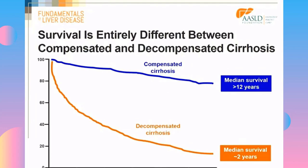The survival is entirely different between compensated and decompensated cirrhosis. For the compensated patient, as long as they remain compensated, the median survival is going to be greater than 12 years. The moment the patient develops one of those clinical complications and becomes decompensated, the median survival immediately goes down to about two years — that is, half the patients will be dead at two years. This is why, when the patient decompensates, it is when we first start thinking of liver transplant.